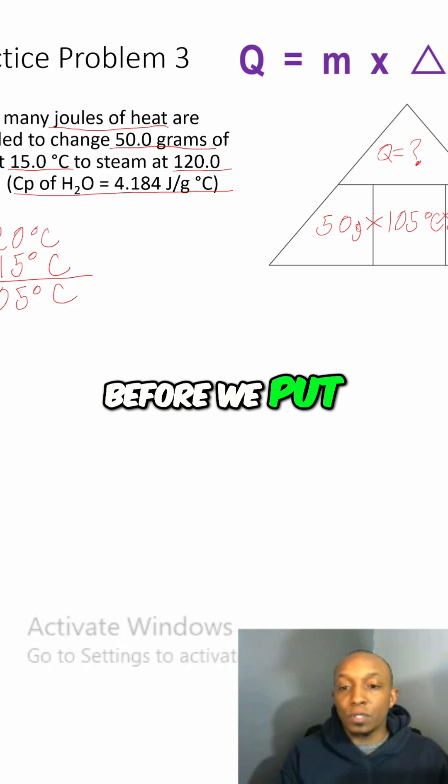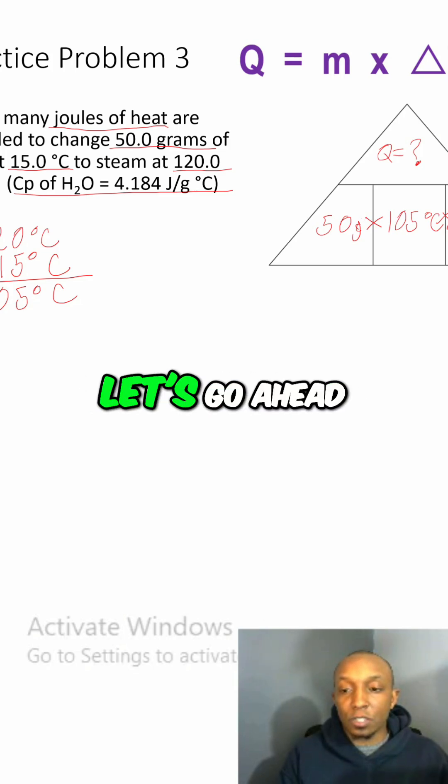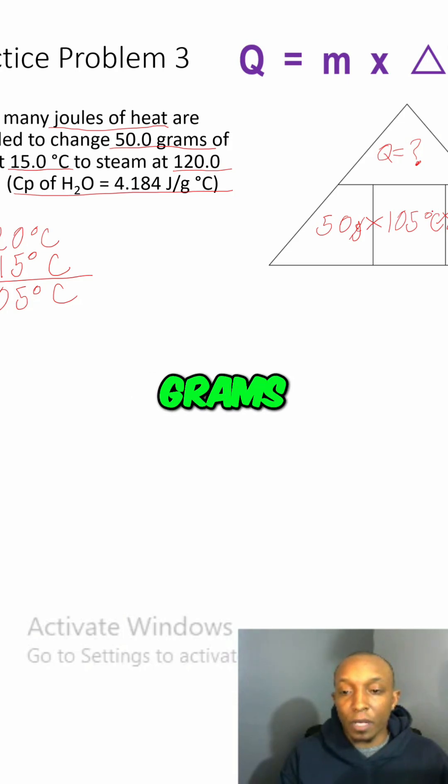So now before we put our numbers in our calculator, let's go ahead and cross out the units that are alike. So we have grams here, grams here, and then we have degrees Celsius here and degrees Celsius here. So that leaves our joules for our heat energy as our unit.